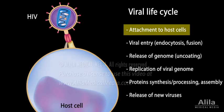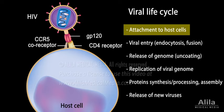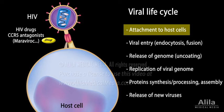To prevent viral attachment, a drug can either bind to the host cell receptor, co-receptor, or to the viral spike protein. Examples are HIV drugs — CCR5 antagonists. They bind to the CCR5 co-receptor, masking its binding site for HIV.